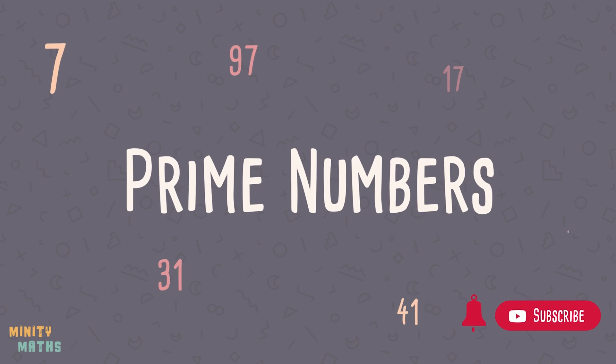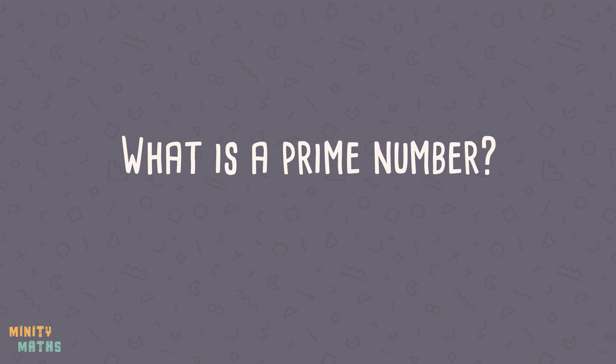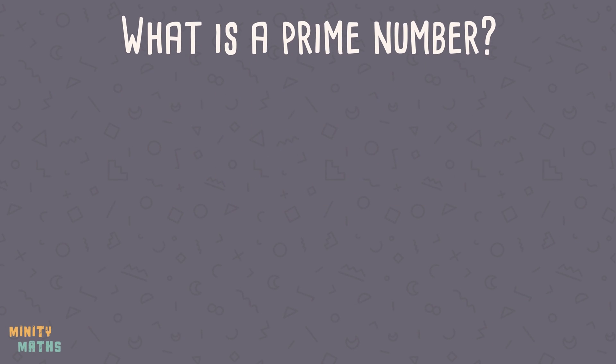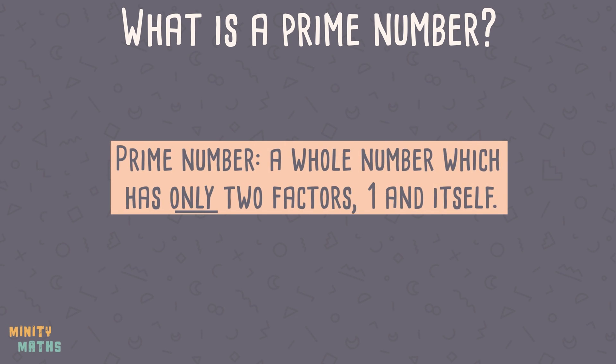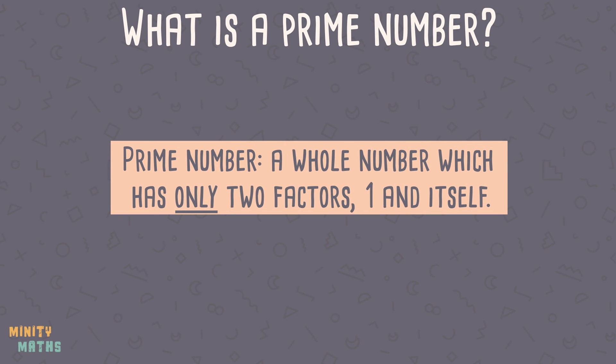So what is a prime number? A prime number is a number that has only two factors: one and itself. No other numbers will equally divide into a prime number.